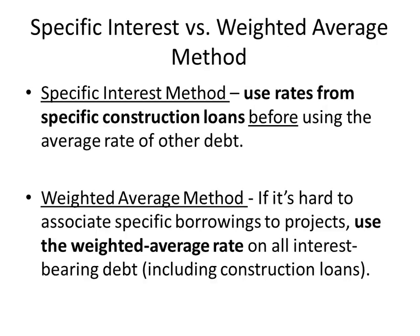First, look at what the interest rate is. If you have a construction loan for a specific project, you look at the interest rate in effect — that's the first rate you use. But if you have more debt outstanding than that loan covers, and the asset is not yet placed in service, you then have to take the weighted average rate of all the rest of your debt.